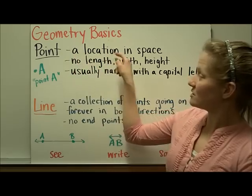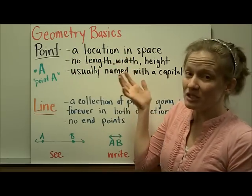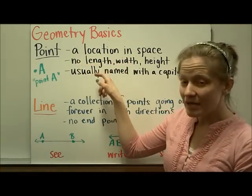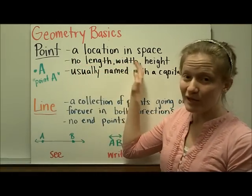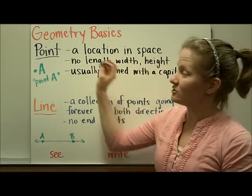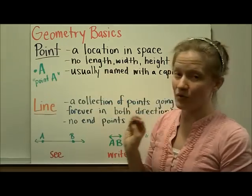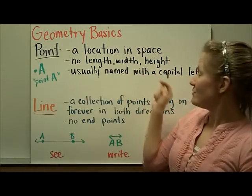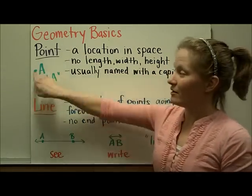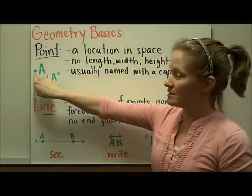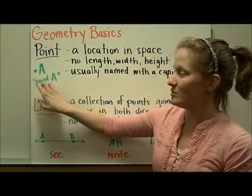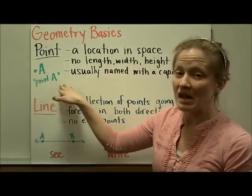A point is just a location in space. It has no length, no width, and no height. It's just simply a point, and it's usually named with a capital letter. So we can see this point here — we would just call it point A.